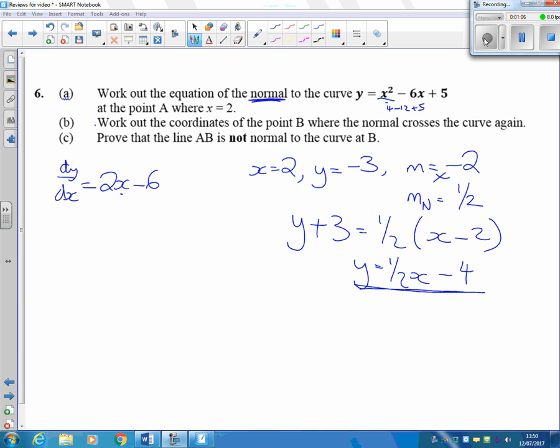Work out the coordinates of point B where the normal crosses the curve again. So we want this line here to meet this curve here. So I'm going to have to write those two things equal to each other. Here's the line equals here's the curve. And it's going to be a quadratic, but I think I'm going to get rid of that half first of all.